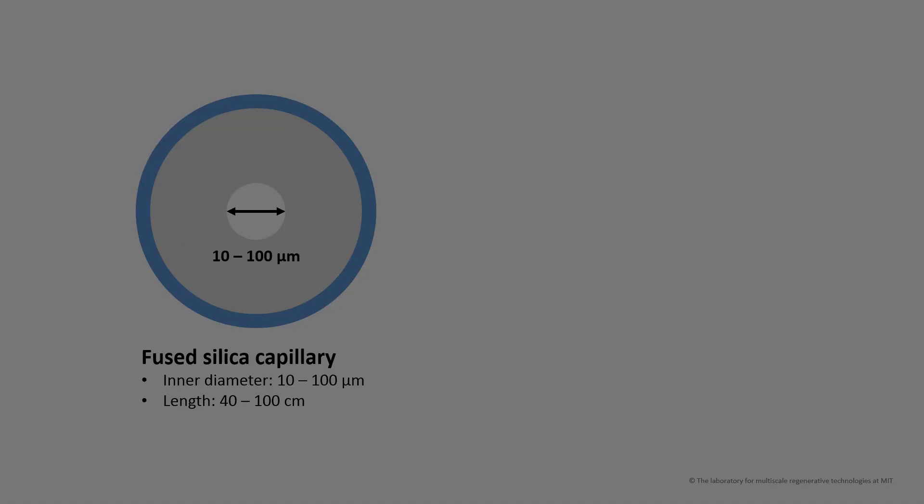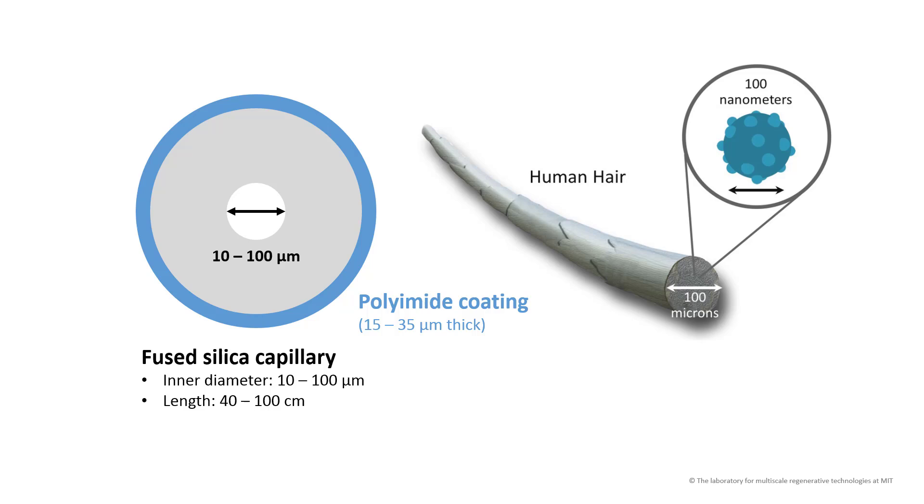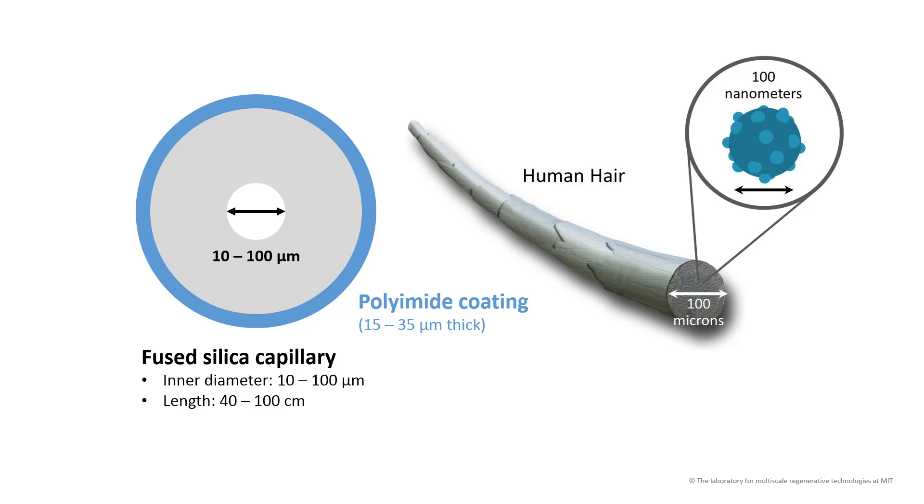This diagram here shows the cross-section of a fused silica capillary. Typically, the capillary we use in CE has an inner diameter of around 10 to 100 micrometers, with length of about 40 to 100 cm. It is usually coated with a thin layer of polyamide to protect the capillary. To give you some perspective of how small the capillary is, we can take a look at our own hair. A typical human hair has a diameter of about 100 micrometers. The inner diameter of CE capillary is even thinner than our hair.